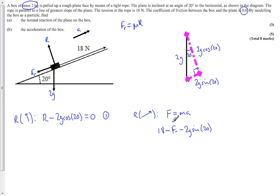So that's the resultant force, and that is equal to the mass, which is 2, multiplied by the acceleration, which is a. We can rewrite this equation as 18 - μR, and we know that μ is 0.6 or 3/5, minus 2g sin(20) equals 2a. Let's call this equation 2.